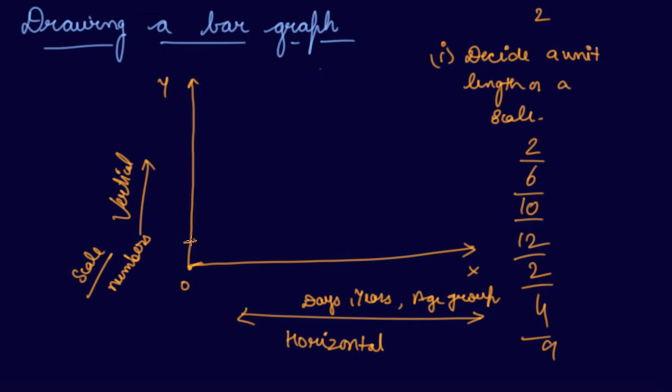So you start taking 1, 2, again 4, 6, 8, 10, 12, 14, and now start drawing the bar graph for the equal length.